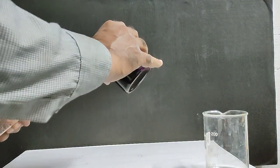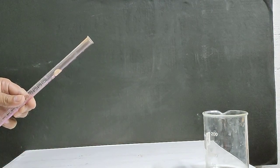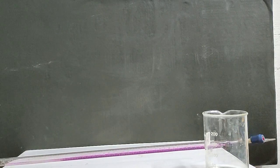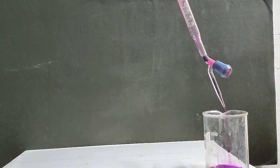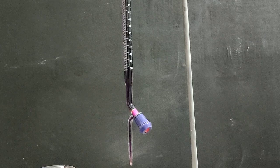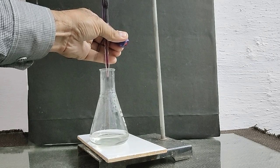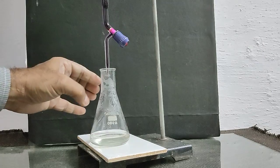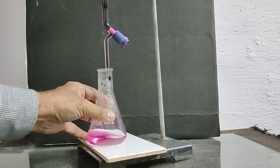Rinse the burette with unknown solution of potassium permanganate. Discard the liquid. Fill the burette with unknown solution of potassium permanganate. Set zero level at upper meniscus of KMnO4. Start titration by adding drop by drop KMnO4 into the conical flask. Color of potassium permanganate disappears. Adding KMnO4 in small amount by shaking the solution.